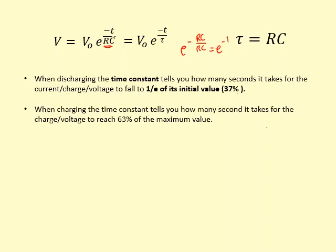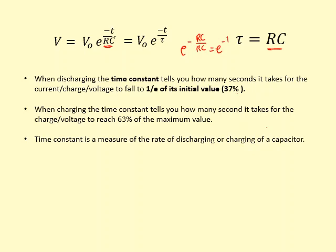And also if you're charging, it's actually 1 minus 37%, which is 63% to reach 63% of the maximum value. Now this RC value is very useful because it gives us an approximation for the time it takes to charge or discharge the circuit.